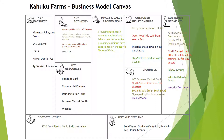Moving to the impact and value proposition for Cuckoo Farms: it reads, 'Providing farm fresh, ready-to-eat food and take-home items while providing a unique farm experience on the north shore of Oahu.' This has a mission statement kind of vibe, coming directly from Kylie, the owner-operator of the farm. The key language — 'farm fresh,' 'ready-to-eat,' 'unique farm experience,' and 'north shore of Oahu' — gives you a strong sense of what Cuckoo Farms is all about.